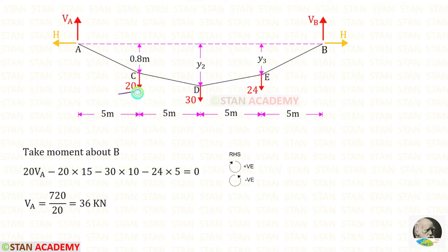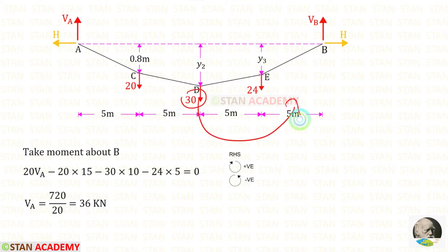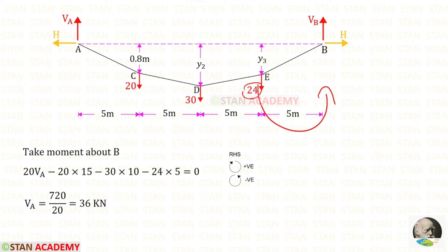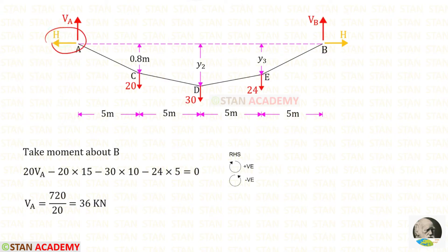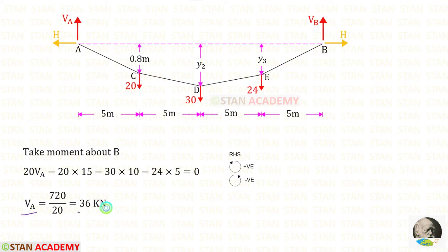This load is acting in the anticlockwise direction, so it will be negative and the distance is 15. This load is acting in the anticlockwise direction, so it will be negative and the distance is 10. This load is also acting in the anticlockwise direction, so it is also negative and the distance is 5. We know that points A and B are at the same level, so for the horizontal thrust H there is no perpendicular distance — we should not consider H when taking moments about B. After the calculation, for VA we will get 36 kN.